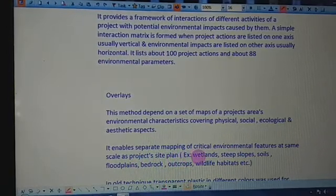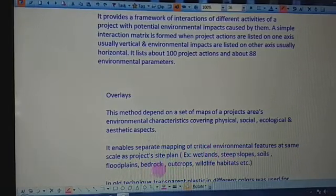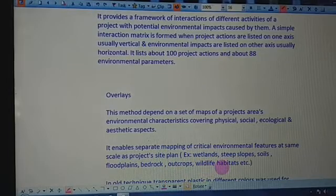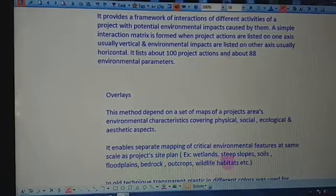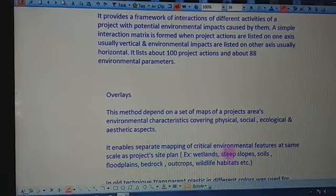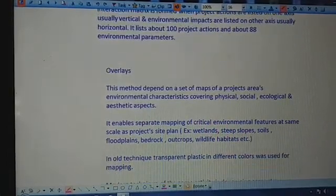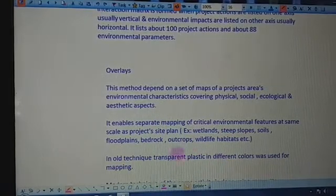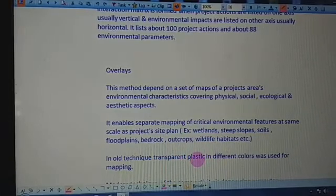Examples include wetlands, steep slopes, soils, field plants, bedrock, outcrops, wildlife, and habitats. All these parameters are mapped. In the past, transparent plastic in different colors was used for mapping.